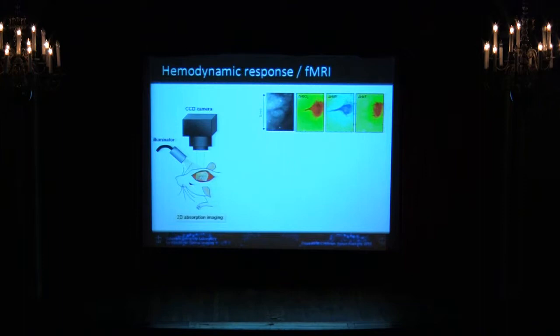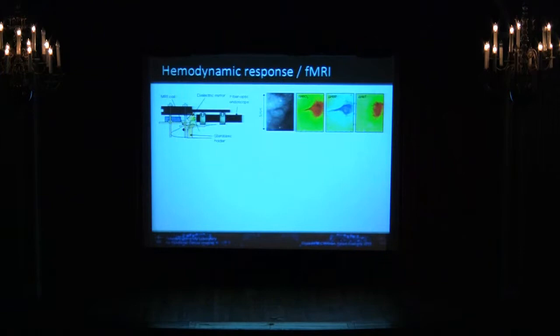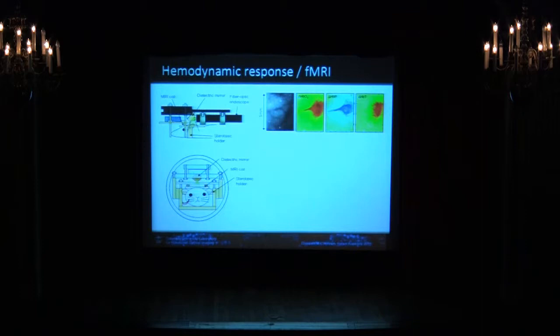In terms of techniques, we work in rats — I apologize, I know most people here are doing primates. We expose the cortex and do something very simple: shine a light onto the surface and take a picture with a camera. When we stimulate the whisker barrel, we see a change in intensity corresponding to a change in blood absorption. Oxy- and deoxyhemoglobin have different colors, so by using different colors of light we can figure out the oxygenation state. We can make maps showing changes in oxyhemoglobin, deoxyhemoglobin, and total hemoglobin. These images look fuzzy because we actually took them inside an fMRI system to verify whether our optical techniques corresponded to the BOLD signal.